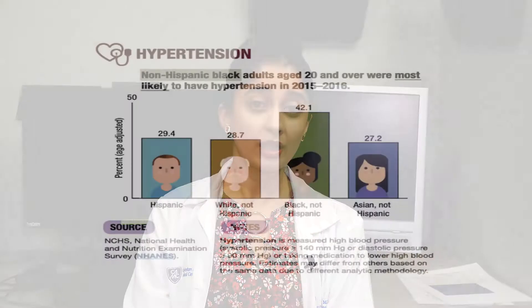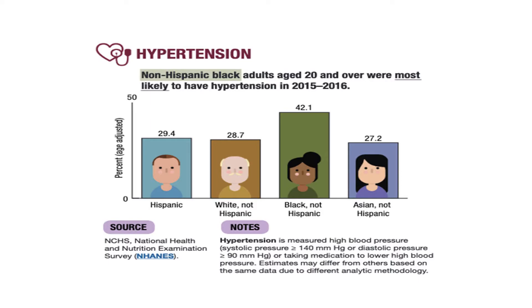We have to realize that cardiovascular disease is the number one killer across the globe. There are certain ethnicities that are more prone to developing certain forms of heart disease than others. For instance, non-Hispanic blacks are at greater risk of developing hypertension than most other ethnicities.